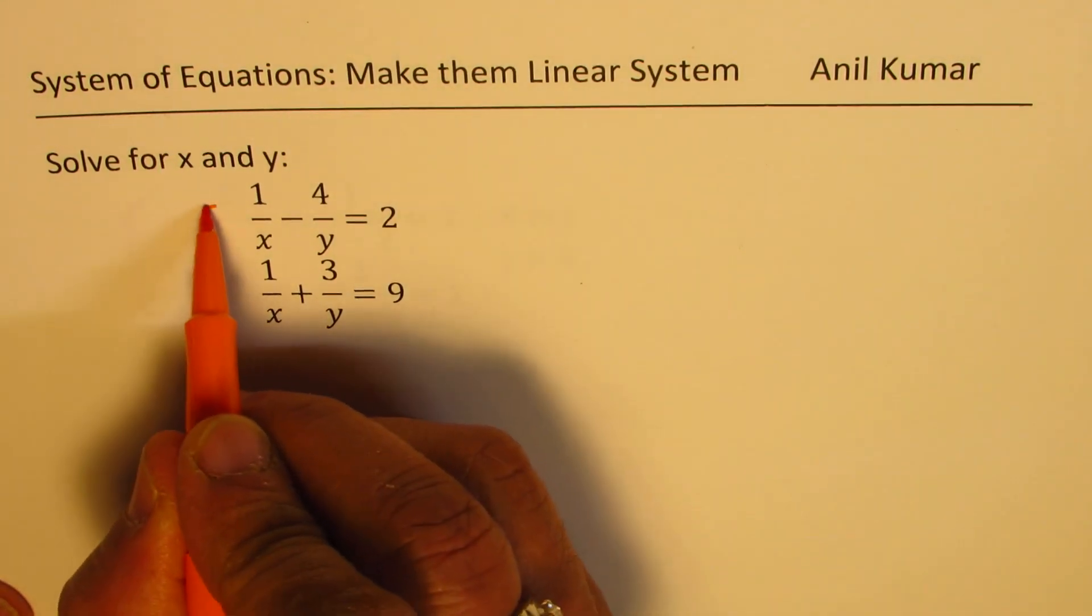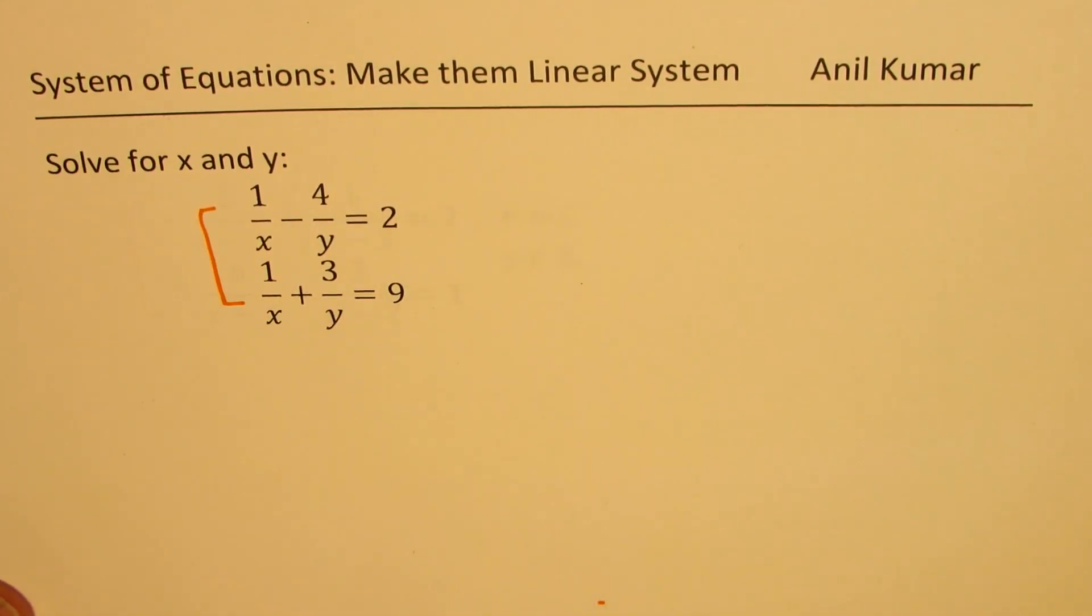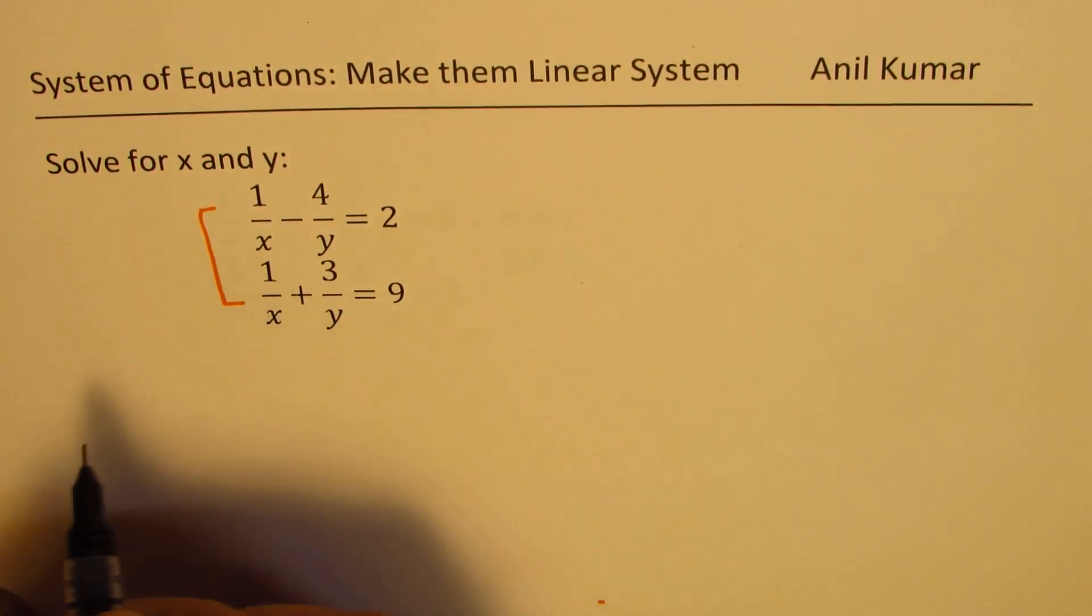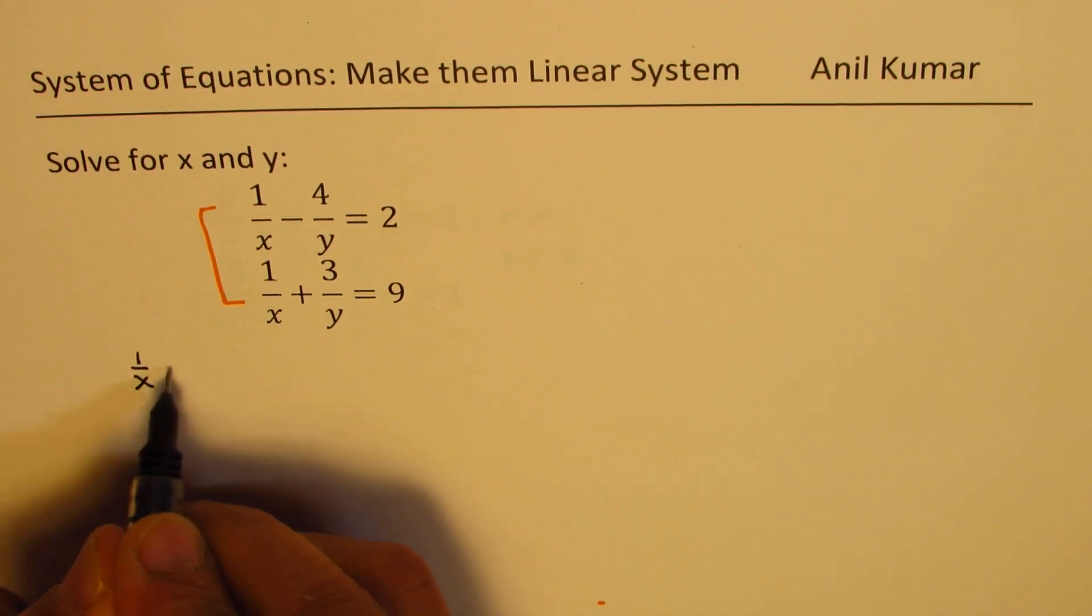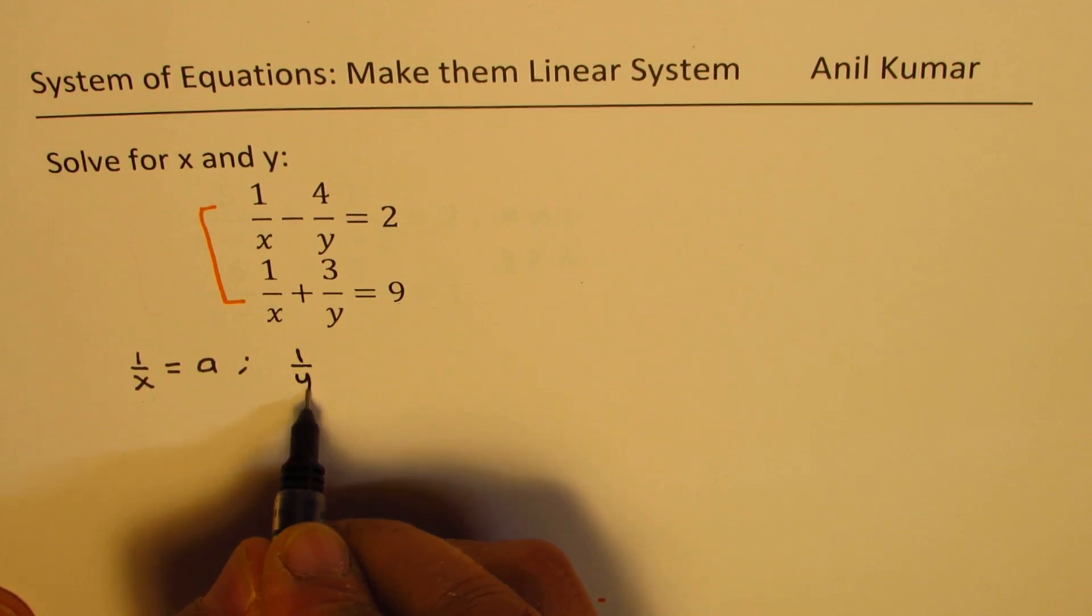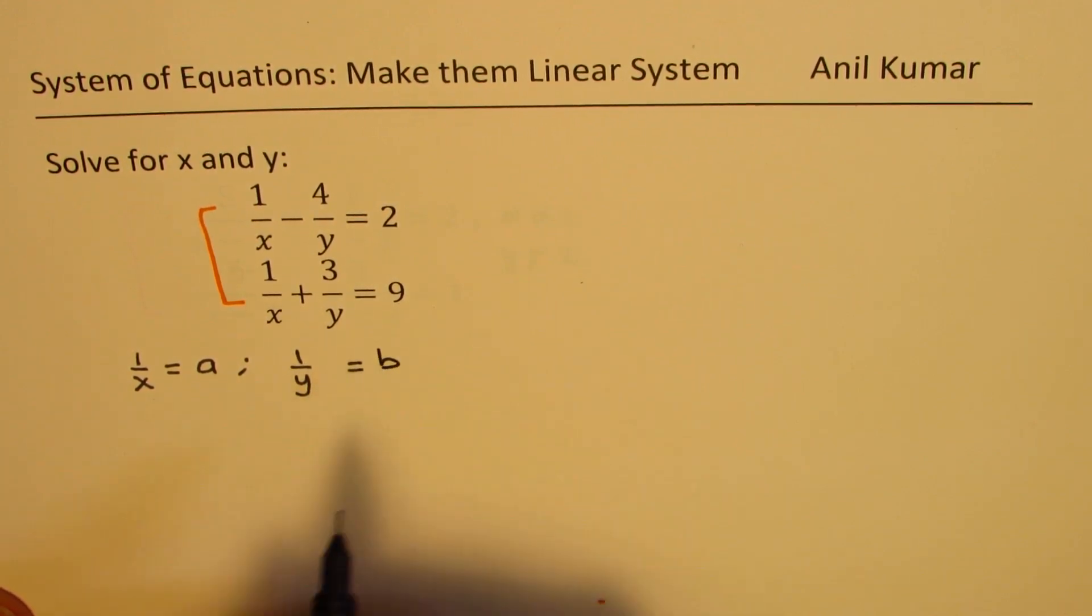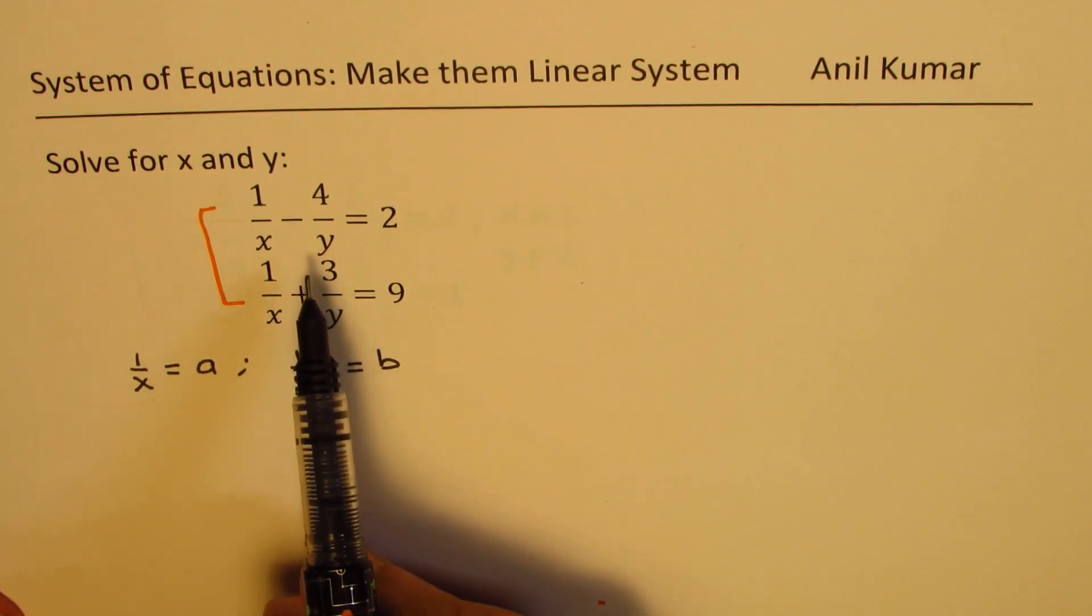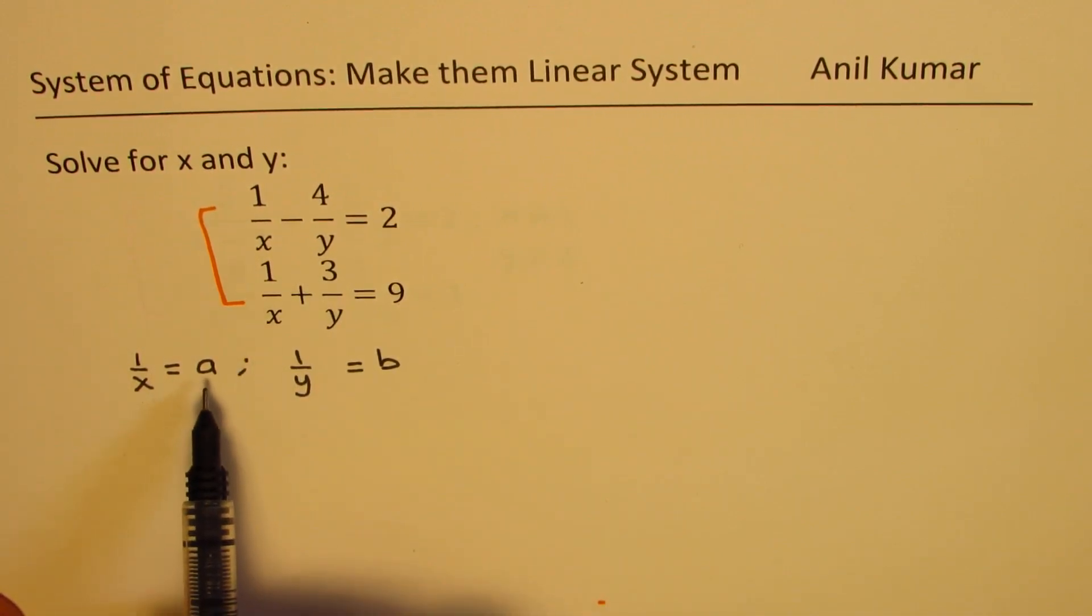Now in this particular system of equations, we can substitute 1 over x equals a and 1 over y equals b. In that case, we'll get a system of equation which is linear. So let's do the substitution.